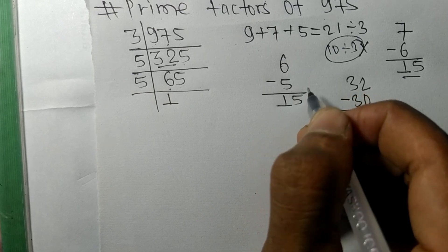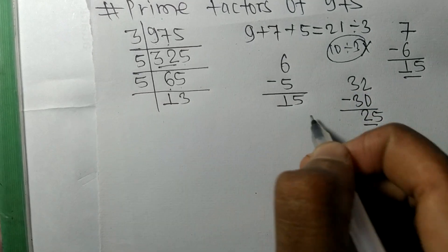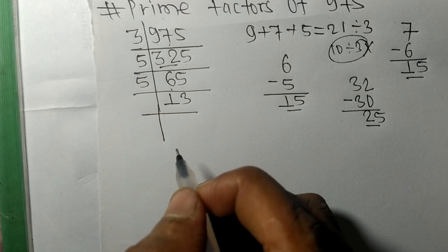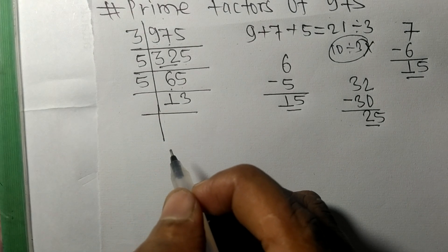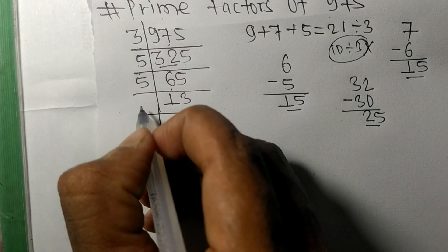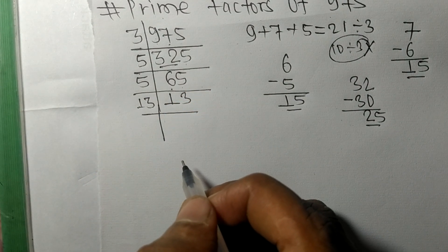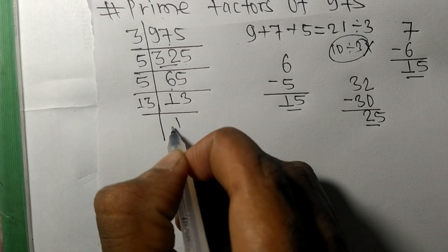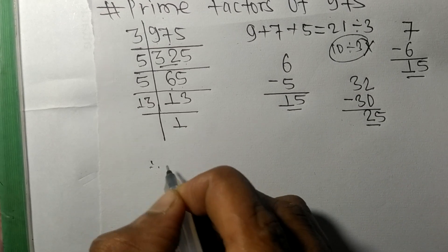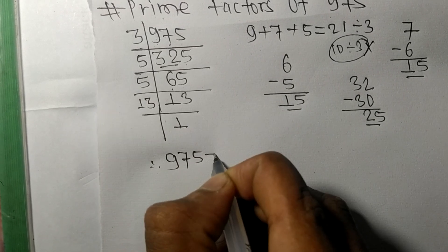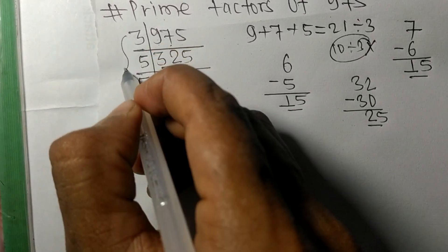So now we got 13 which is a prime number, so it is exactly divisible by 13 itself. On dividing we get 1. Therefore 975 equals, from this side, 3 times 5 times 5 times 13.